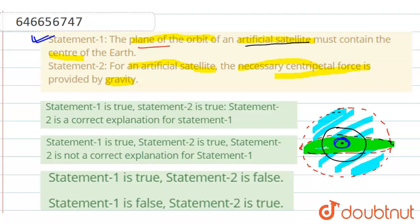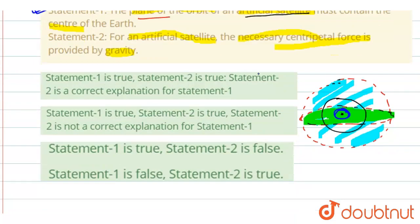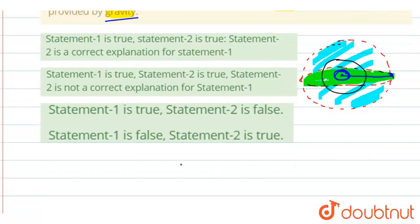Statement 2 says: for an artificial satellite, the necessary centripetal force is provided by gravity, that is the gravitational force. So at any point, when we join the point to the center of the earth, the point on the orbit to the center of the earth, the revolution takes place with the help of centripetal force.